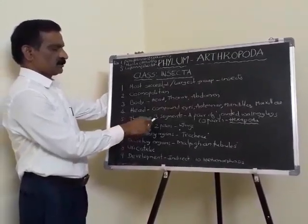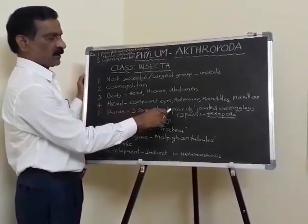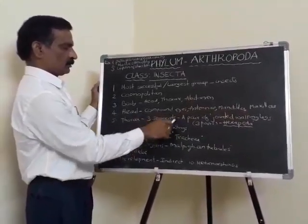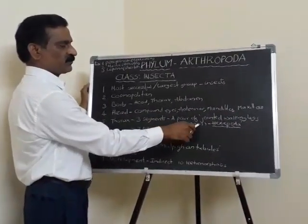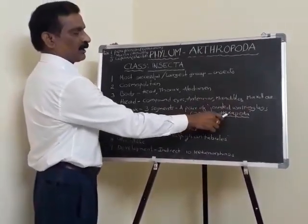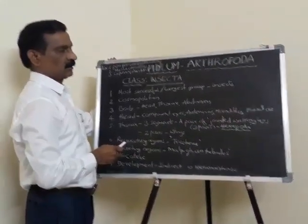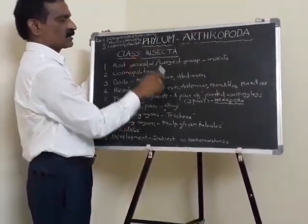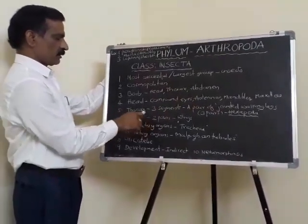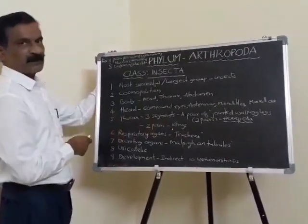The thorax has three segments. Each segment consists of a pair of jointed walking legs, so three segments have three pairs of jointed legs — hence the name Hexapoda. Hexa means six, so six legs. The class Insecta is otherwise called Hexapoda. The thorax also bears two pairs of wings, which help in flying.